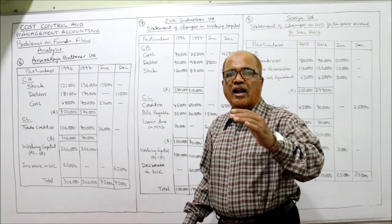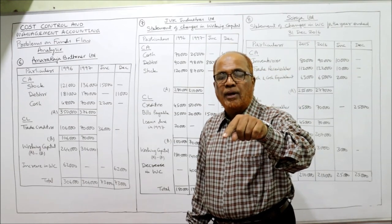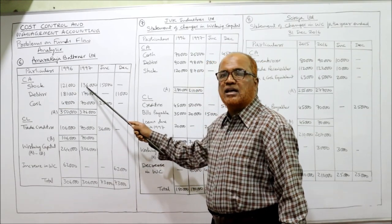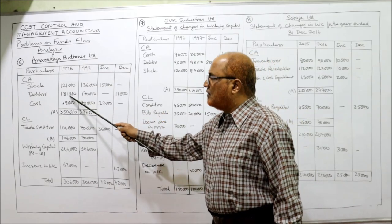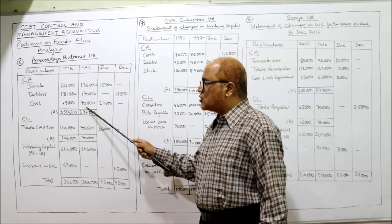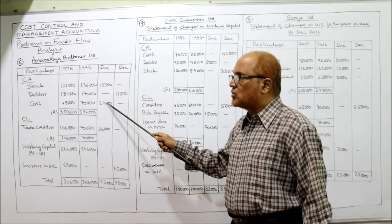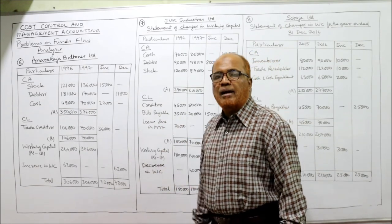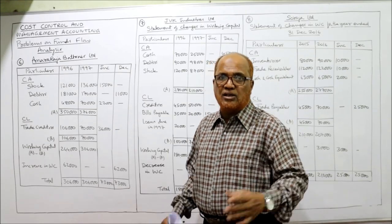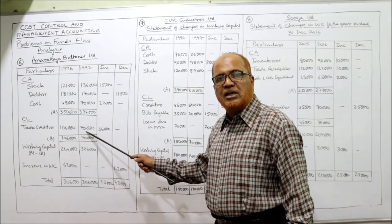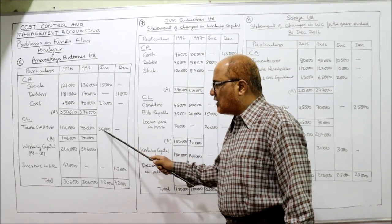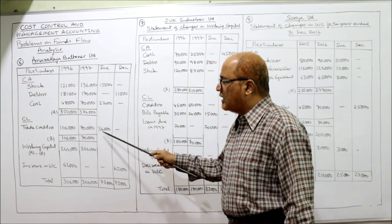Stock increased from 1,21,000 to 1,36,000 — increase column, 15,000. Debtors decreased from 1,81,000 to 1,70,000 — decrease column, 11,000. Cash increased from 48,000 to 70,000 — increase column, 22,000. Trade creditors decreased from 1,06,000 to 70,000. For current liability, decrease means increase column — so 36,000 goes in the increase column.